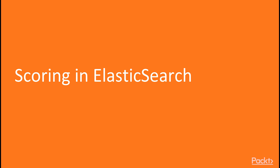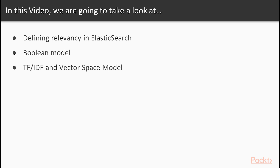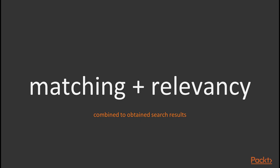Welcome to this video entitled Scoring in Elasticsearch. In this video, we will define relevancy in Elasticsearch. Then we look at the Boolean model used to match documents, and then term frequency inverse document frequency along with the vector space model, which are used to establish relevancy. Apache Lucene and Elasticsearch by extension employs the Boolean model to achieve document matching.